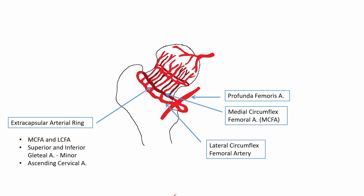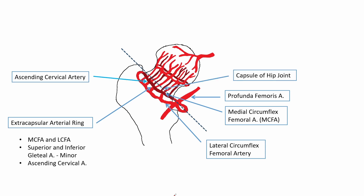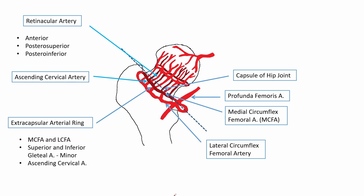The extracapsular arterial ring gives rise to the ascending cervical arteries. When the ascending cervical arteries penetrate the capsule of the hip joint they are known as retinacular arteries, and they have three groups: anterior, posterosuperior, and posteroinferior. The anterior group derives its supply mainly from the lateral circumflex femoral artery, and the posterosuperior and posteroinferior groups derive their supply mainly from the medial circumflex femoral artery.